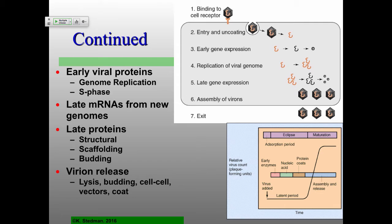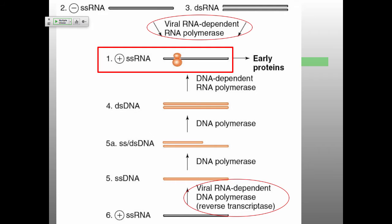Any questions on this overall picture? This is something we're going to be going over again and again. A really nice way to review is to use this as a backdrop for thinking about individual viruses. Now let's talk about the different classes of viruses. It's really about the messenger RNA, which gets translated — always cellular ribosomes translating that messenger RNA inside the cell. Basically any nucleic acid you can think of is packaged in virions and then gets made into messenger RNA.